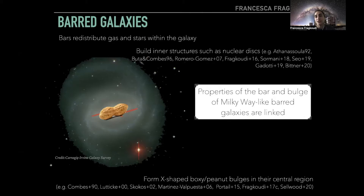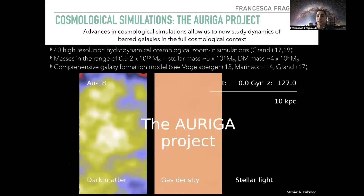Because of all these effects that the bar has on the central regions of galaxies, the properties of the bar and the bulge in Milky Way-like galaxies are going to be tangled together or linked. To study and disentangle all these different processes, we can use cosmological simulations, which are very useful for studying the formation and evolution of galaxies, since we can trace this from high redshifts down to low redshifts in the full cosmological context, taking into account things like mergers and gas accretion.